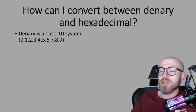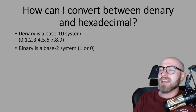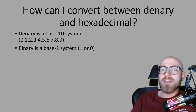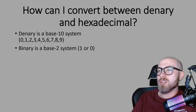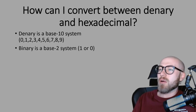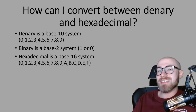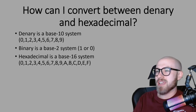Denary uses the numbers 0, 1, 2, 3, 4, 5, 6, 7, 8, and 9. As we learned in our binary lesson, binary is a base 2 system which only uses two values: 1 or 0. Now hexadecimal uses a base 16 system, which sounds complicated but it's really not.